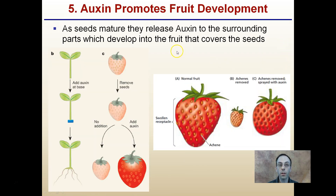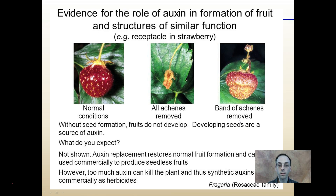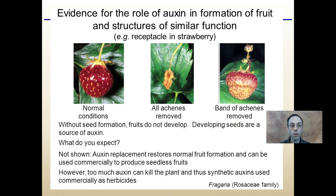Auxin promotes fruit development. As seeds mature, they release auxin to the surrounding parts, which develop into fruit that covers the seeds. Here we see a normal fruit with seeds. If we remove those seeds, the strawberry doesn't grow nearly as well. But if we take the seeds off and spray with auxins, we see somewhat of a return to normal — not quite 100% because it's interacting with other hormones, but a much closer resemblance to the normal fruit than if we eliminate the auxin by just removing the seeds.